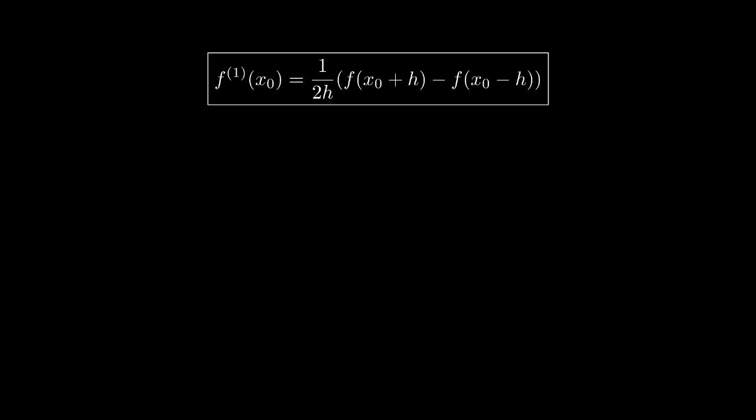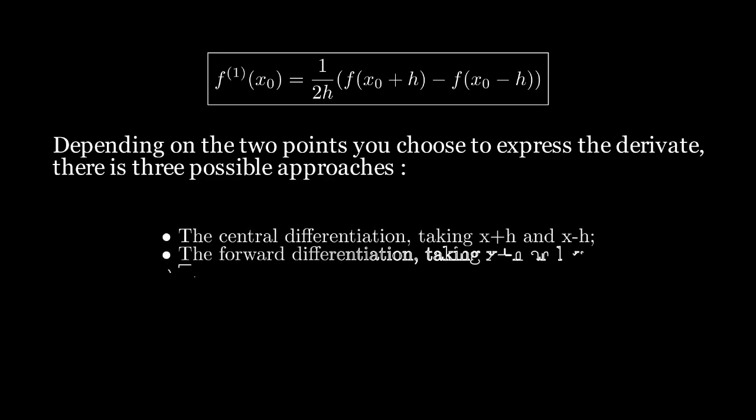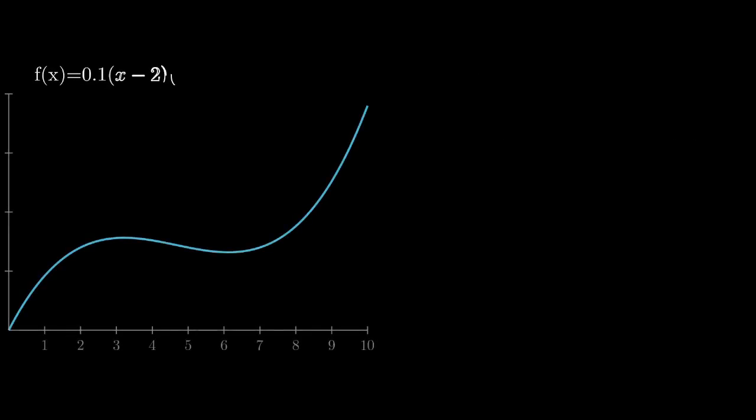There is also a small note, where depending on the two points you choose to express the derivative, there are three possible approaches: the central, forward and backwards differentiation. The forward differentiation is taking x plus h and x, the backwards is x and x minus h, and the central is the one we just did.